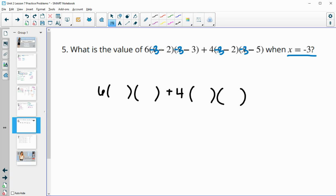Let's go ahead and simplify some of this. We've got 6 times this parenthesis times this, plus 4 times two different sets of parentheses. In this first set, negative 3 minus 2 is negative 5, and negative 3 minus 3 is negative 6. Then negative 3 minus 2 is negative 5, and negative 3 minus 5 is negative 8. 6 times negative 5 is negative 30 times negative 6 is positive 180. 4 times negative 5 is negative 20 times negative 8 is positive 160. Add those together and we get 340.